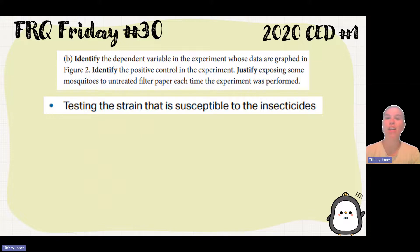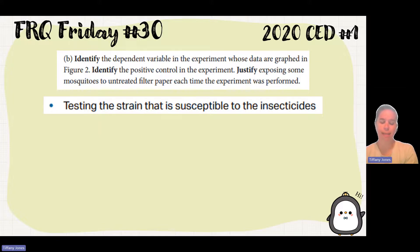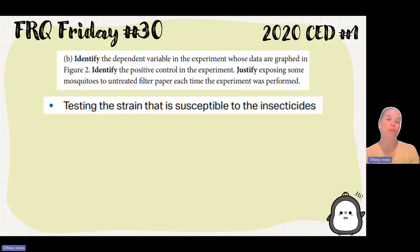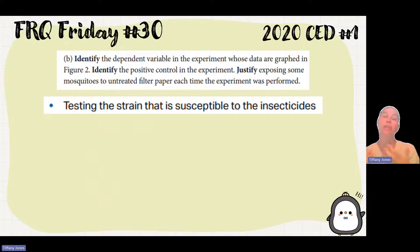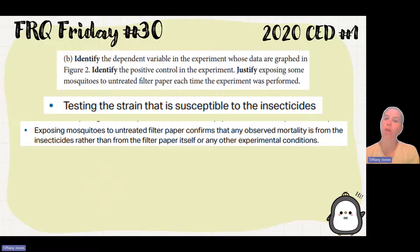By exposing some mosquitoes to untreated filter paper at each time point — if you put filter paper in there along with the insecticides, you don't know whether the mosquito is responding to the insecticide or to the filter paper itself. Having untreated filter paper allows us to confirm that the experimental results are due to the treatment group, not the filter paper. Exposing mosquitoes to untreated filter paper confirms that any observed mortality is from the insecticides rather than the filter paper or other experimental conditions.